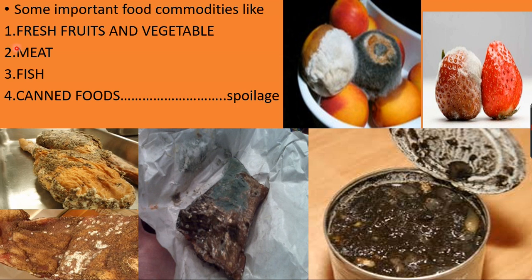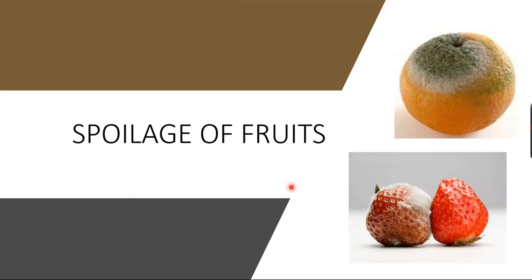We are going to discuss four important food commodities in detail: spoilage of fresh fruits and vegetables, spoilage of meat, spoilage of fish, and spoilage of canned foods. Here you can see examples — tomatoes spoiled by fungi, strawberries spoiled by microorganisms, spoiled meat, spoiled fish, and spoiled canned food.